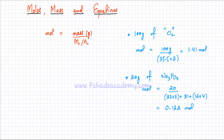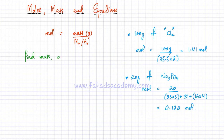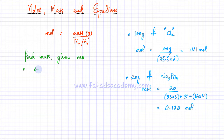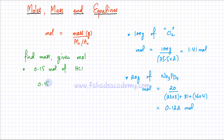You can also use this formula to find an unknown mass of a substance given its moles. For example, I have 0.15 moles of HCl and I want to figure out the mass. I'll use the formula: moles equals mass over Mr. So 0.15 equals mass over the Mr of HCl, and mass is what I'm trying to find.